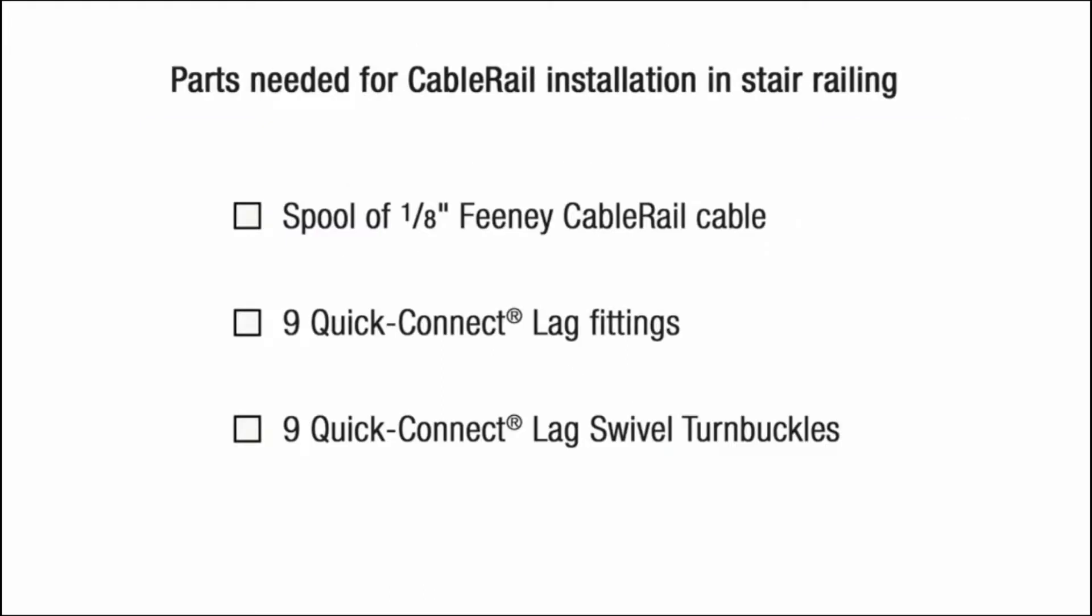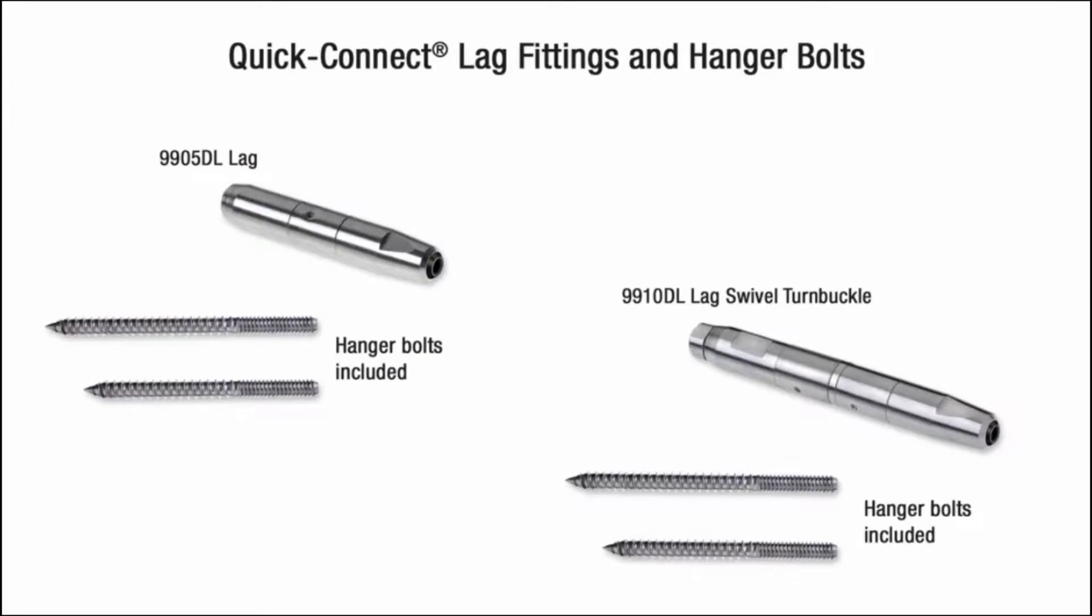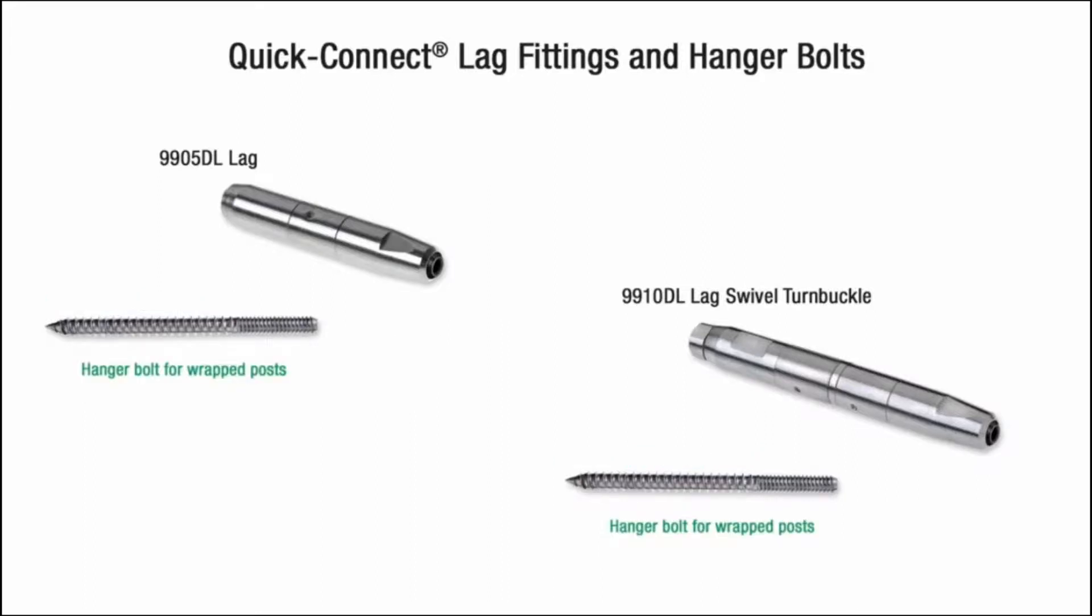Here is a list of the parts you will need: a spool of one-eighth inch Feeney cable rail cable, nine Quick Connect lag fittings, nine Quick Connect lag swivel turnbuckles. Each fitting comes with two hanger bolts, a short one that has two inches of lag thread for non-wrapped wood posts and a long one that has two and a half inches of lag thread for wrapped or sleeved wood posts. We'll be using the long hanger bolt for this installation.